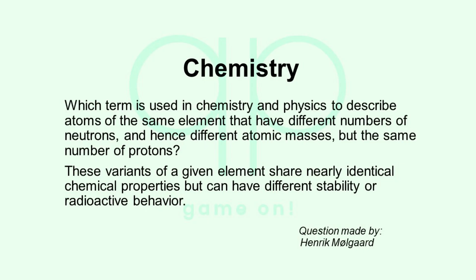Which term is used in chemistry and physics to describe atoms of the same element that have different numbers of neutrons, and hence different atomic masses, but the same number of protons? These variants of a given element share nearly identical chemical properties, but can have different stability or radioactive behavior.